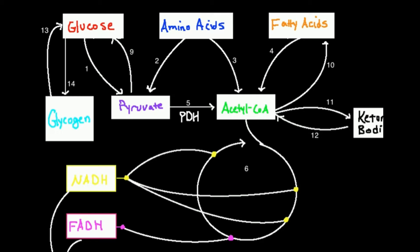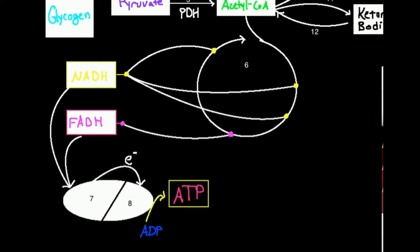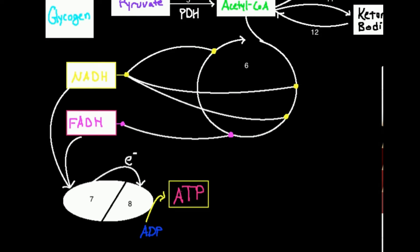Acetyl-CoA can move into the TCA cycle, which is number six right here. In the TCA cycle, there's some main things that we produce that we want to look at. The TCA cycle produces NADH and FADH2, and there should be a 2 right here. I apologize for that. FADH2.